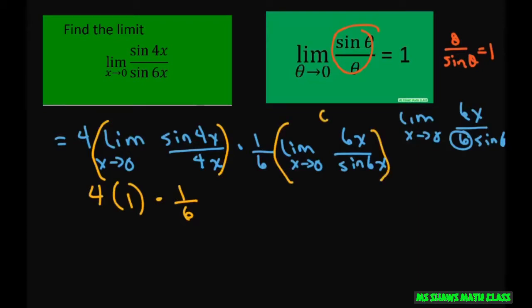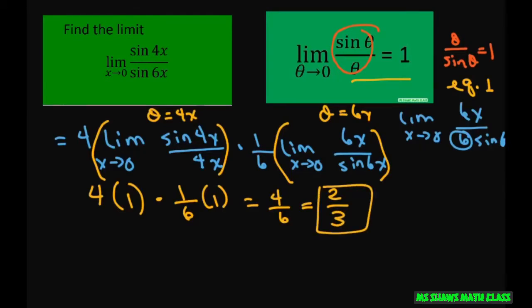In this case, we let theta equal 6X. And in this case, we let theta equal 4X to make it look like, or we'll call this equation 1 again. And so this would be 1. This gives you 4 sixths, and that reduces to 2 thirds. And that's it. Thank you. Have a nice day.